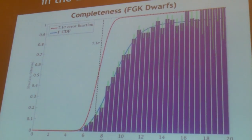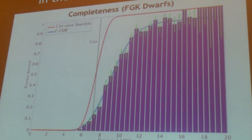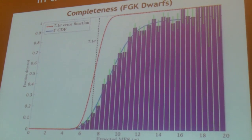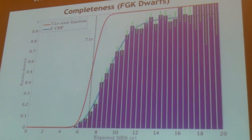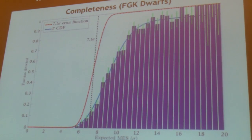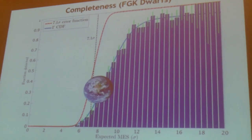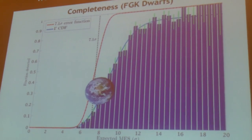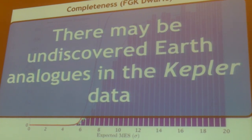One thing very relevant here is that the Kepler mission and pipeline has a completeness issue in the Earth parameter space. I'm showing a plot of completeness — fraction of planets detected using injection recovery tests versus the signal or MES. The completeness of a perfect pipeline is the red line; the actual completeness we get is shown by the blue bars. There may be Earth-like planets hiding in this region where the blue is well below the red, and perhaps we can still go in and recover those Earths.